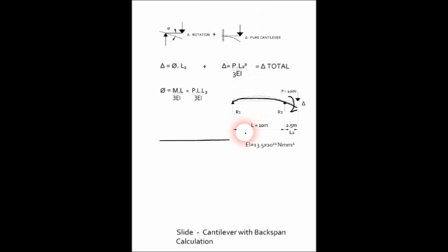The cantilever span, it's got a backspan of 10 meters, a cantilever span of 2.5 meters, point load of 10 kilonewtons, and an EI value which is a typical sort of steel EI value, 13.5 times 10 to the 12.